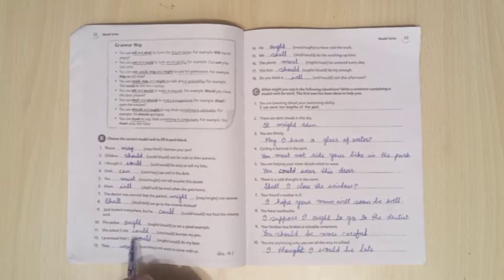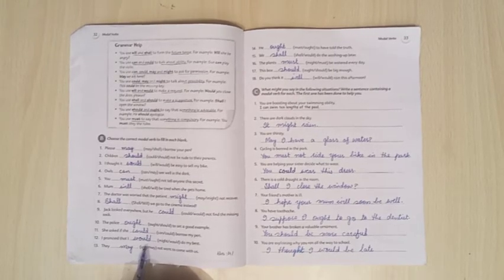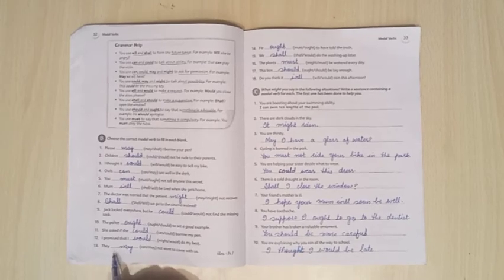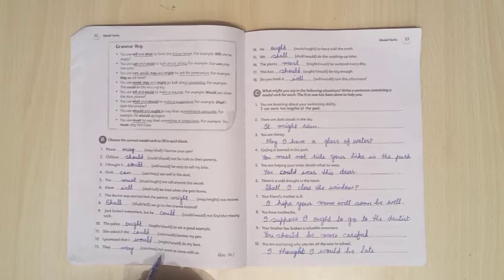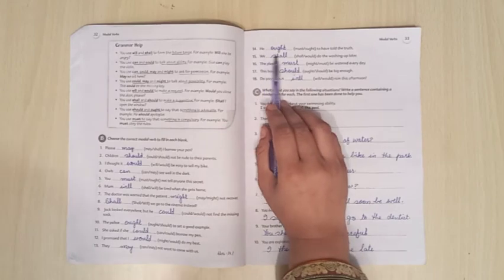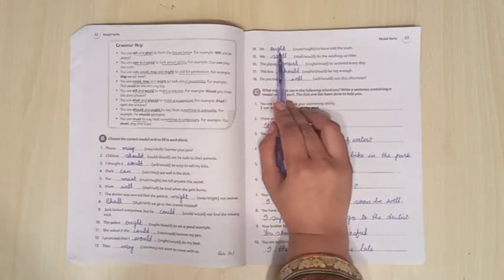She asked if she could borrow my pen. Could will be used here because to ask for permission. I promise that I would do my best. Would will be used here to make a request. They may not want to come with us. May will be used here to talk about the possibility. He ought to have told the truth. Ought will be used here because something is advisable.